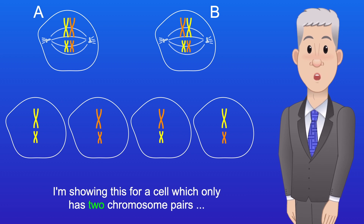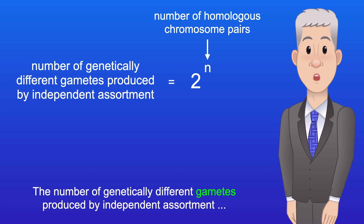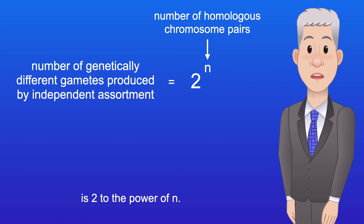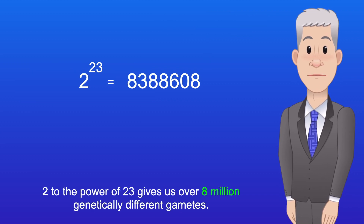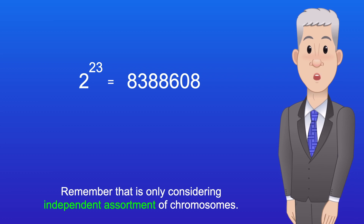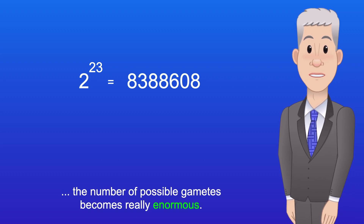I'm showing this for a cell which only has two chromosome pairs — a long pair and a short pair. But human cells actually have 23 chromosome pairs. The number of genetically different gametes produced by independent assortment is 2 to the power of n, where n is the number of homologous chromosome pairs. 2 to the power of 23 gives us over 8 million genetically different gametes — and that's only considering independent assortment of chromosomes. When we factor in genetic variation due to crossing over, the number of possible gametes becomes really enormous.